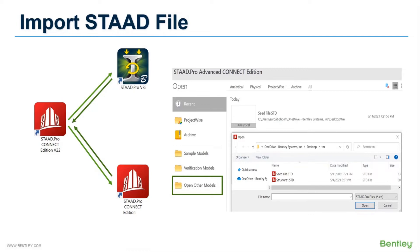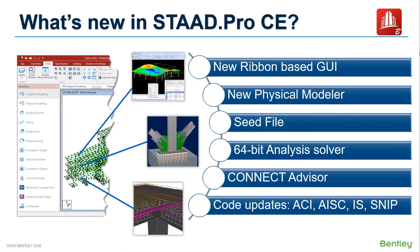So what are those new features in Connect Edition? I have listed here a few of the important updates of this new version. In Connect Edition, a new graphical interface has been introduced. In the older V8i version, a tool-based interface was available, whereas it has been changed into a ribbon-based interface in Connect Edition. To enhance the modeling experience and to make it more BIM compatible, a new and powerful physical modeler has been introduced with several advanced features.